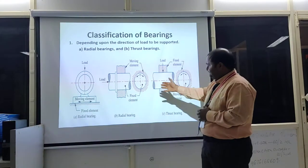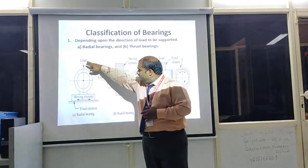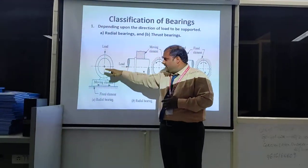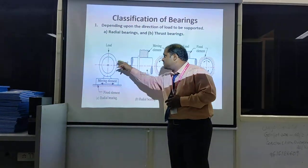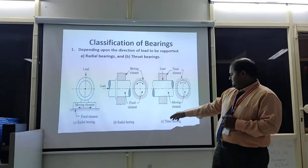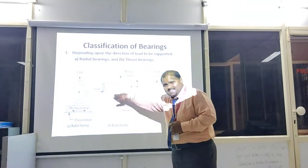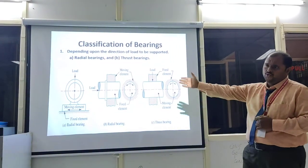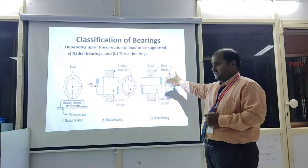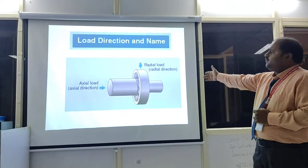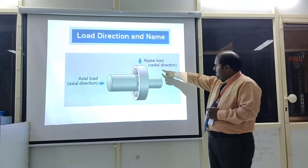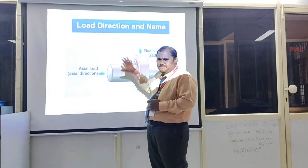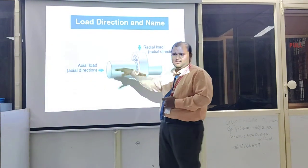You can observe in the diagram how the load is applied. Here the load is applied radially — that is called a radial bearing. For thrust bearing, the load acts axially. The two diagrams of radial bearing and thrust bearing show the radial direction and axial direction of load application.